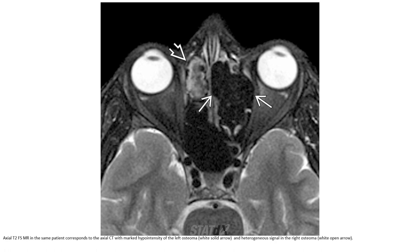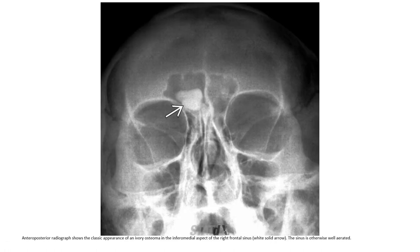T2 fat-saturated MRI in the same patient corresponds to the axial CT, with marked hypointensity of the left osteoma and heterogeneous signal in the right osteoma. Plain radiograph shows the classic appearance of an ivory osteoma in the inferior medial aspect of the right frontal sinus. The sinus is otherwise well aerated.